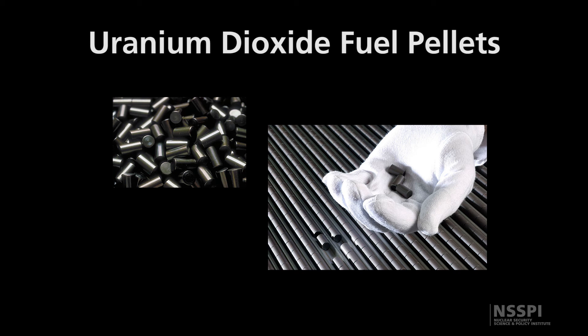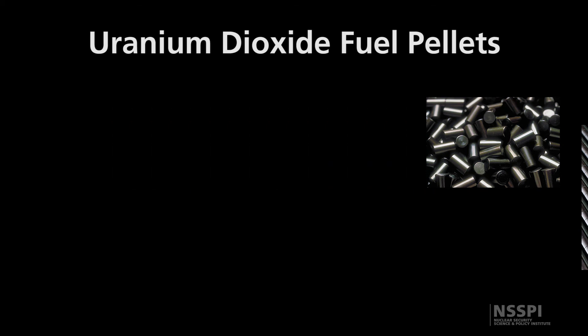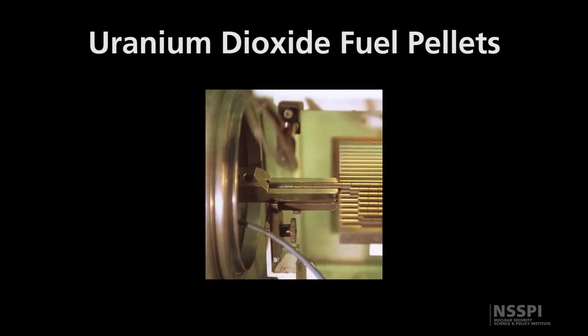Those uranium dioxide pellets then would get loaded into steel tubes or metal tubes. Those tubes are typically about 14 feet long, so they're very long but again very skinny, about the diameter of my pinky. And the typical tubes that are used in the United States are made of what they call Zircaloy, which is a zirconium alloy.